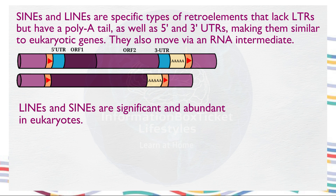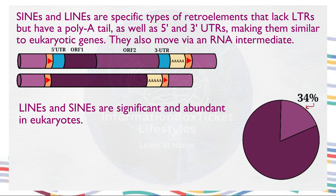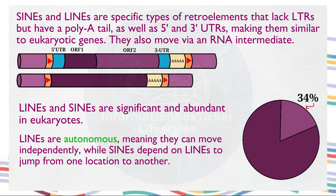LINEs and SINEs are significant and abundant in eukaryotes, comprising about 34% of the genome. LINEs are autonomous, meaning they can move independently, while SINEs depend on LINEs to jump from one location to another. They vary in size: mouse LINEs are approximately 6,000 base pairs, whereas human SINEs are around 248 base pairs. In summary, LINEs are larger and SINEs are smaller.